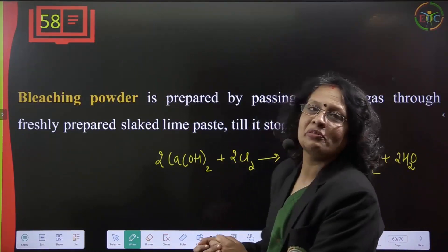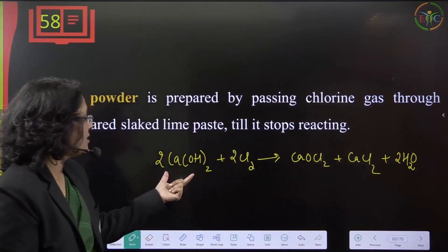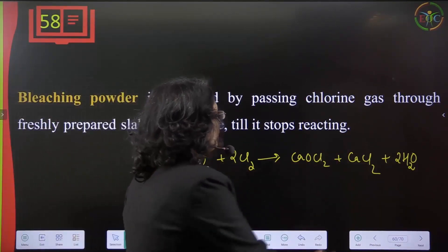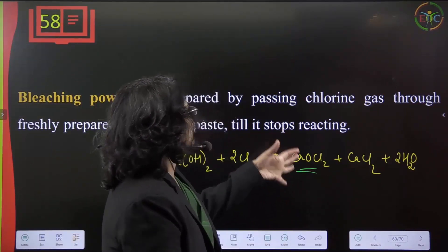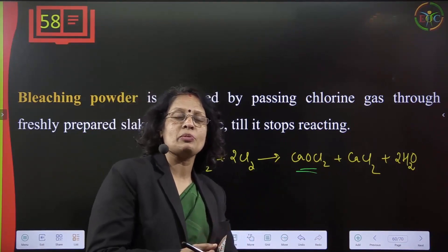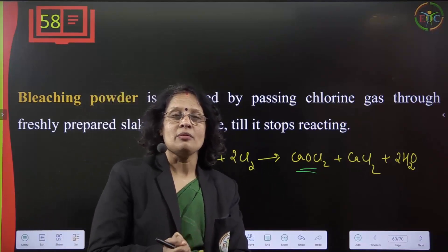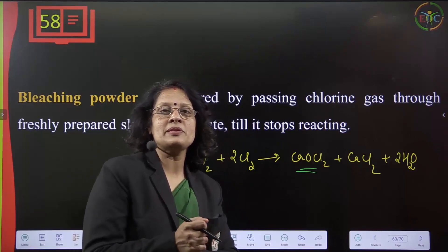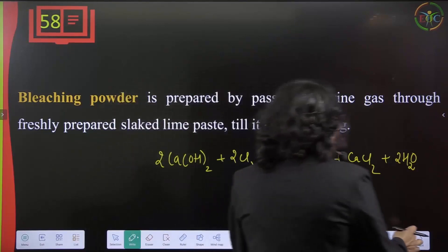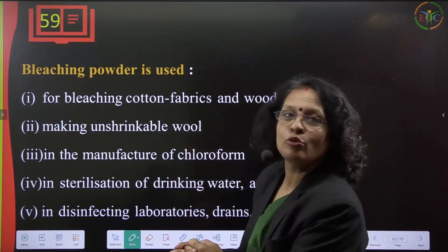Bleaching powder is prepared by passing chlorine gas through freshly prepared slaked lime paste (calcium hydroxide) until it stops reacting. Bleaching powder is used for bleaching action on paper pulp and cotton fabric. It is also used as a disinfectant.